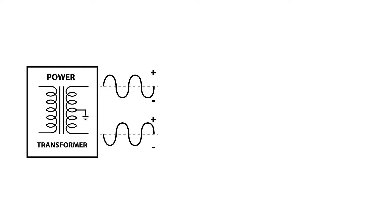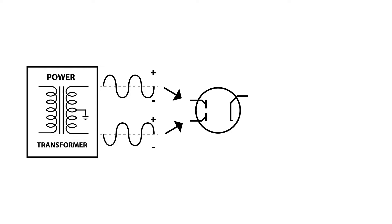The two voltage sources from the secondaries are fed into the two plates of the tube rectifier, which acts as essentially two diodes tied together to a common cathode. The purpose of a rectifier or diode is that it only allows current to flow in one direction. So we only get the positive half of the waveform coming out of the cathode. Because the two halves are out of phase, we end up getting all the positive humps of both waveforms combined into one — an AC voltage wave comprised of all the positive humps of the two original out-of-phase voltage waves.